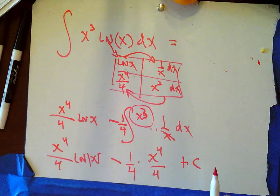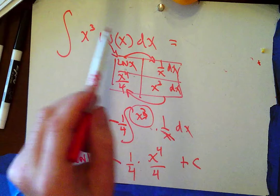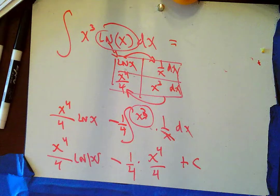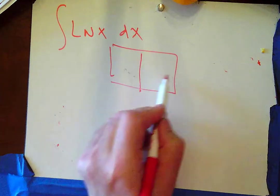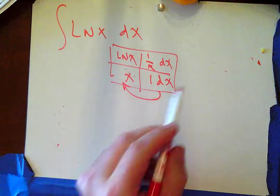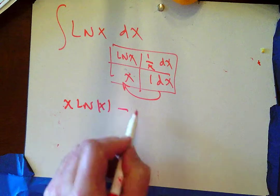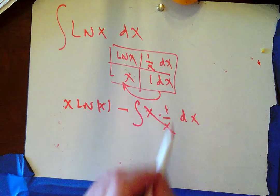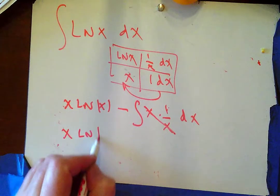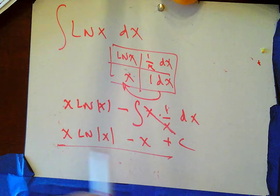I pull out the 1/4 constant and cancel an x, giving x to the fourth over 4 ln(x) minus 1/4 times the antiderivative of x cubed, which is x to the fourth over 4, plus C. I'd probably write that as x to the fourth over 4 ln(x) minus x to the fourth over 16, plus C, since something like this could appear on a multiple choice test with a 16. I'm putting the polynomial in the antiderivative column, except when I don't know the antiderivative of the other function.